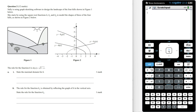The rule for the function h is h equals the square root of 2 minus x. State the maximal domain for h. Looking at the graph of h, we can see that the maximal domain is going to be from negative infinity to 2, where 2 is inclusive.